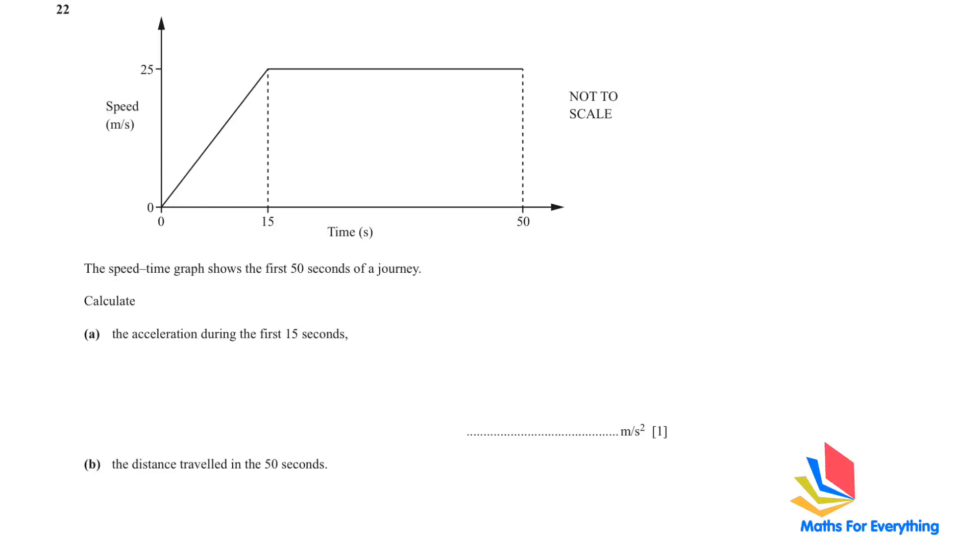Question 22 is a speed time graph showing the first 50 seconds of a journey. Part A: Calculate the acceleration during the first 15 seconds. We find acceleration by finding the difference in speed, so 25 minus 0 divided by the time taken, which is 15. This gives us 5 over 3. We shouldn't write the answer in improper fraction, so convert it to mixed number, which is 1 2/3, or as a decimal 1.67 rounded to 2 decimal places.